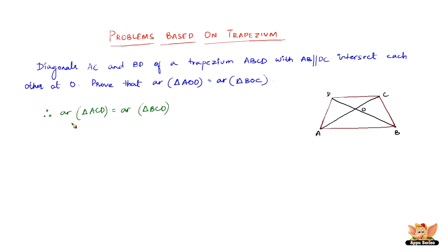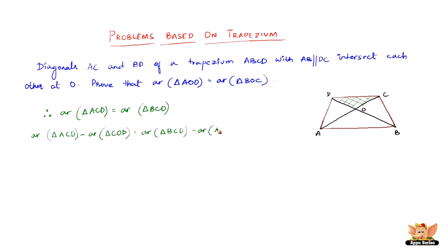Now we need to prove that triangle AOD equals triangle BOC. Considering triangles ACD and BCD, we subtract triangle COD from both. So it becomes: area of triangle ACD minus area of triangle COD equals area of triangle BCD minus area of triangle COD — since triangle COD is a common part of both.